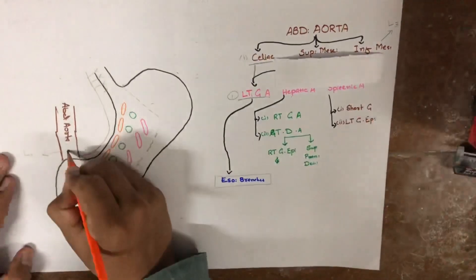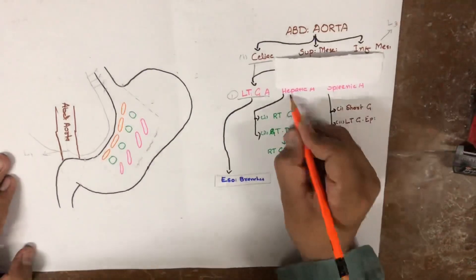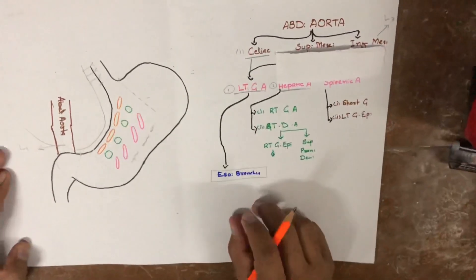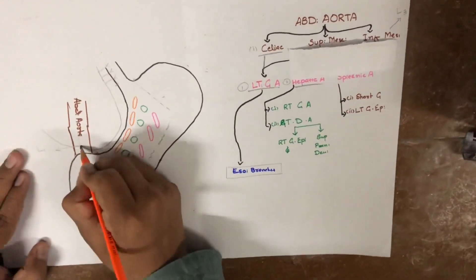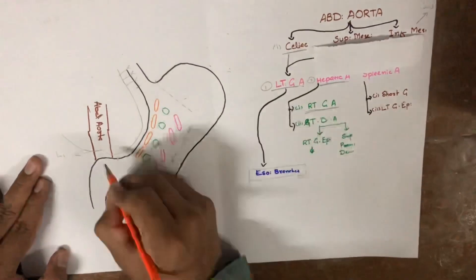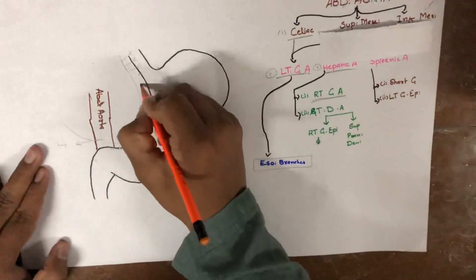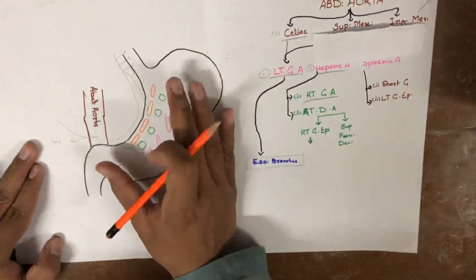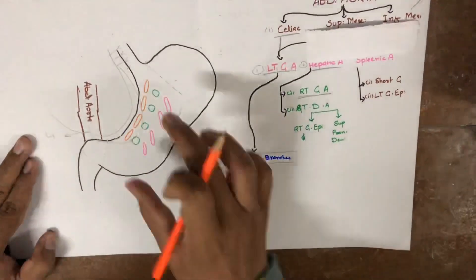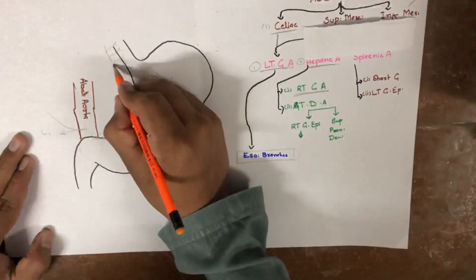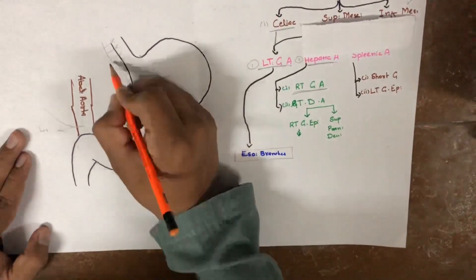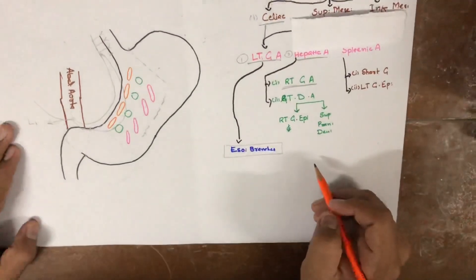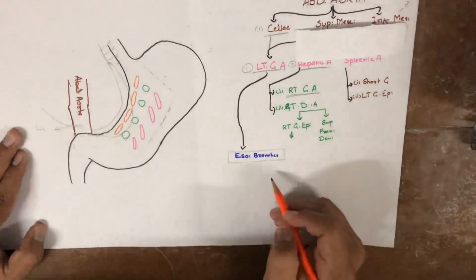There is another artery called the hepatic artery, which is the second branch of the celiac artery. The hepatic artery gives a branch called the right gastric artery. The right gastric artery supplies the lower left border of the stomach, and this right gastric artery anastomoses with the left gastric artery, which arises from the celiac artery. These two arteries anastomose with each other.